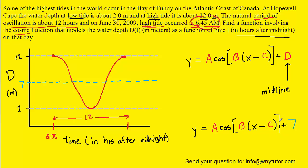The next value to find is capital A, which stands for the amplitude. The amplitude is measured from the midline to either the highest or lowest value — you get the same result in either case. From 7 to 12 is a value of 5, and from 7 to 2 is also a value of 5. So the amplitude of this cosine graph is 5, meaning we plug in 5 for A.